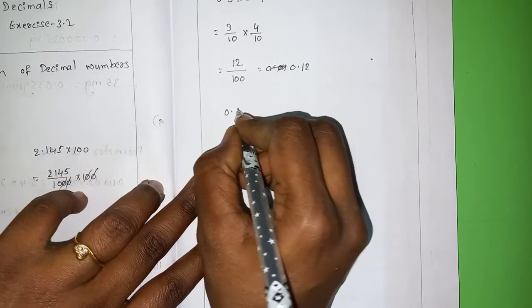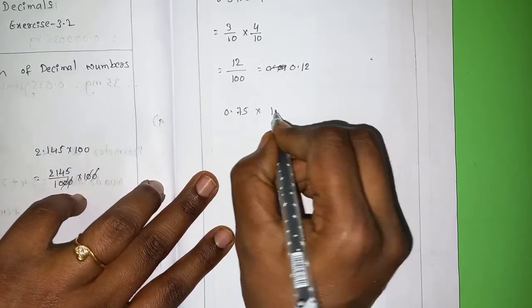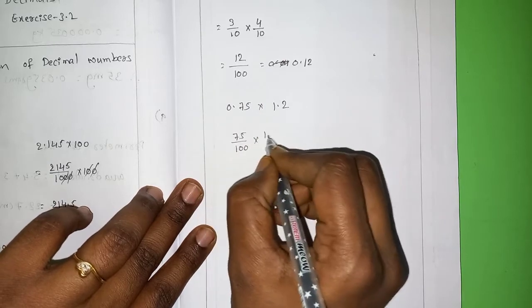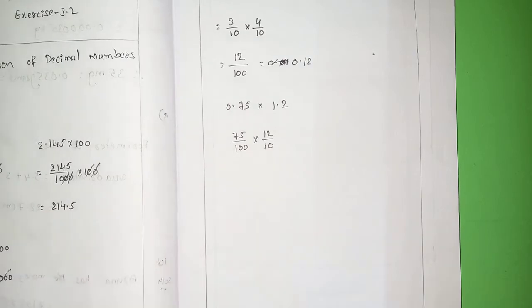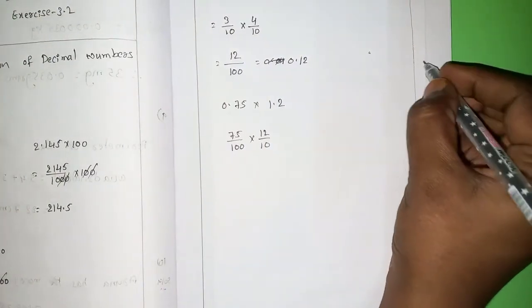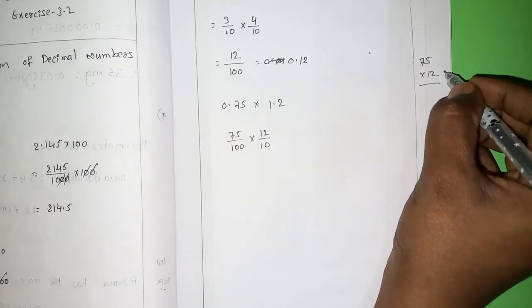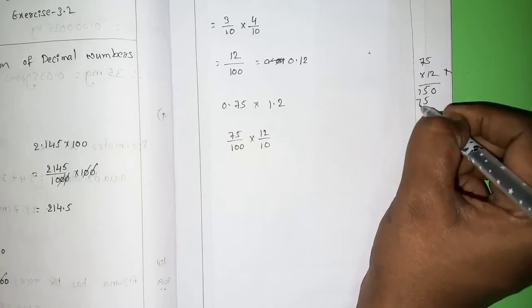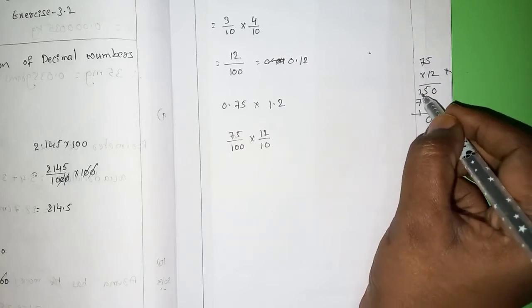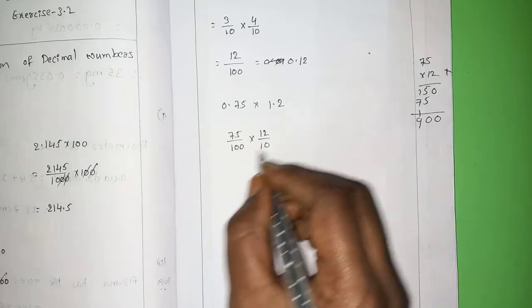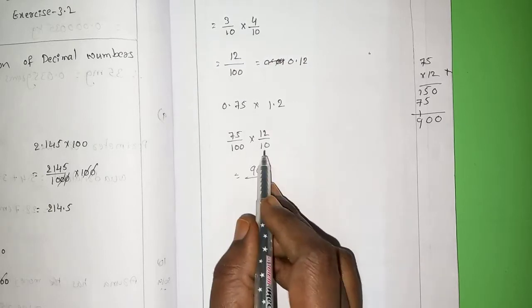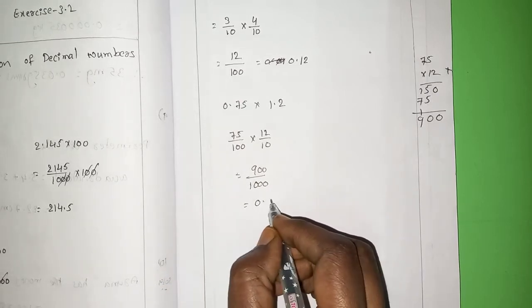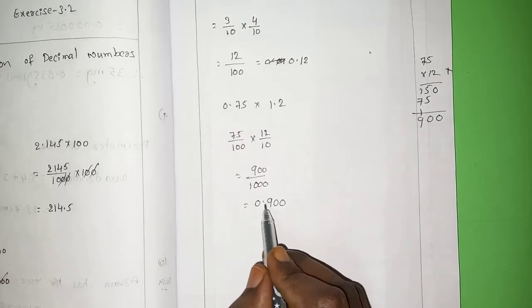Same way. 0.75 into 1.2. 75 by 100 into 12 by 10. 75 into 12. 5 twos are 10. 7 twos are 14, plus 1, 15. 1 fives are 5. 1 sevens are 7, plus 5, 10. 1 plus 7, 8. 8 plus 1, 9. 900 divided by 100 into 10? 1000. So, 3 digits. 0.9.